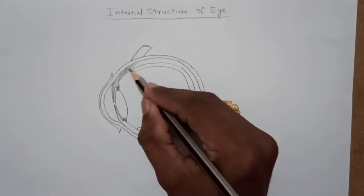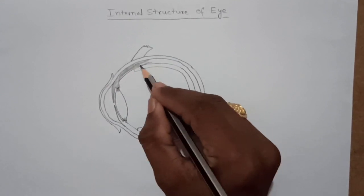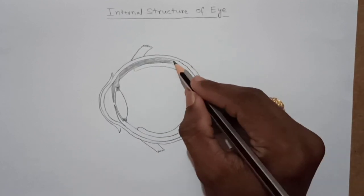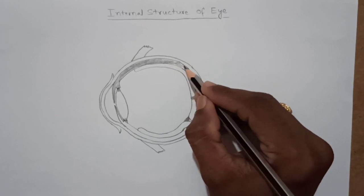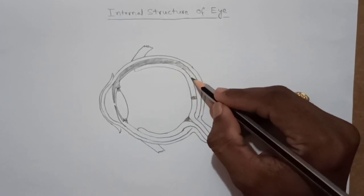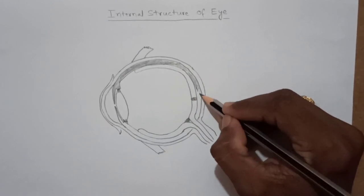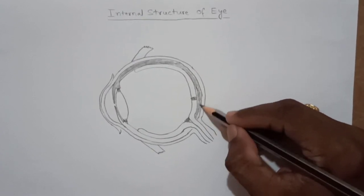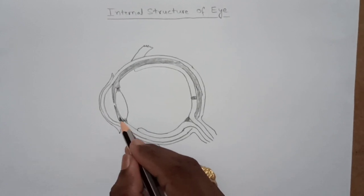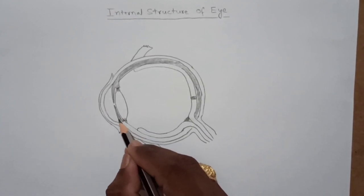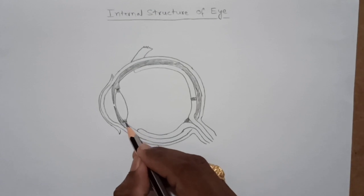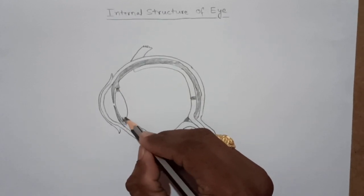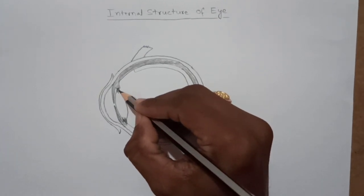As the second layer consists of more number of blood vessels and it is dark in color, I am darkening here that particular layer only. So we can observe here ciliary muscles and suspensory ligaments. These are suspensory ligaments.